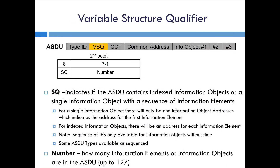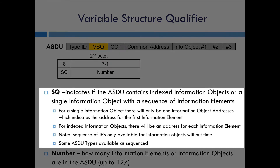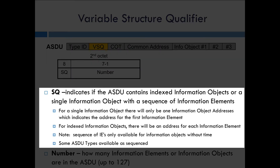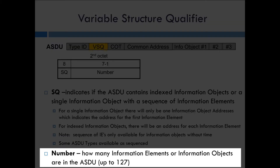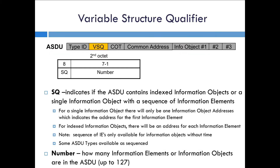The second octet in the ASDU is the variable structure qualifier, which tells you how many elements are in the ASDU. There is an option to have a sequence ASDU — if it's a sequence, the address tells you what the starting element is, and this number tells you how many elements from that starting point are included. If it's not sequenced, the number is simply how many objects you have, and each one will have its own address. The standard tells you ASDU by ASDU whether or not it supports sequence data.